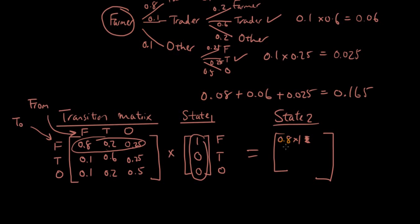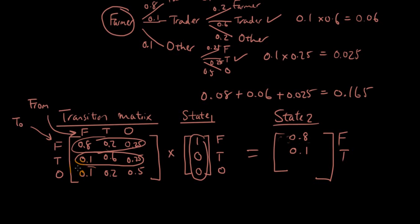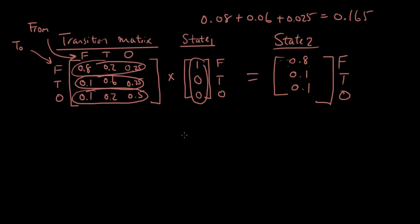Continuing for the third row: 0.1×1 + 0.2×0 + 0.5×0 = 0.1 other. So state 2 is [0.8, 0.1, 0.1]. This makes sense — if we start with one farmer, after one generation we expect 80% farmers, 10% traders, and 10% other.